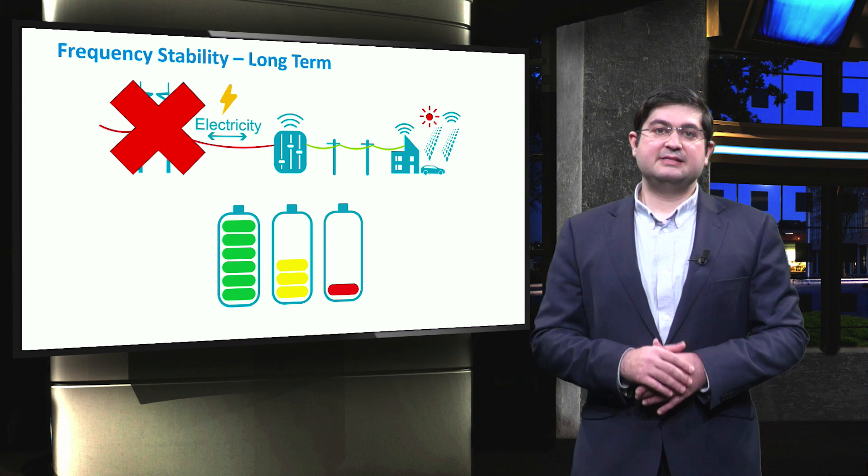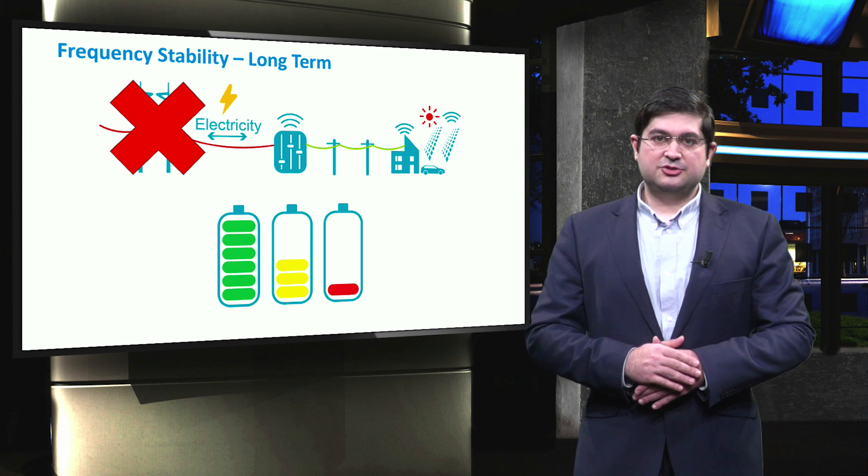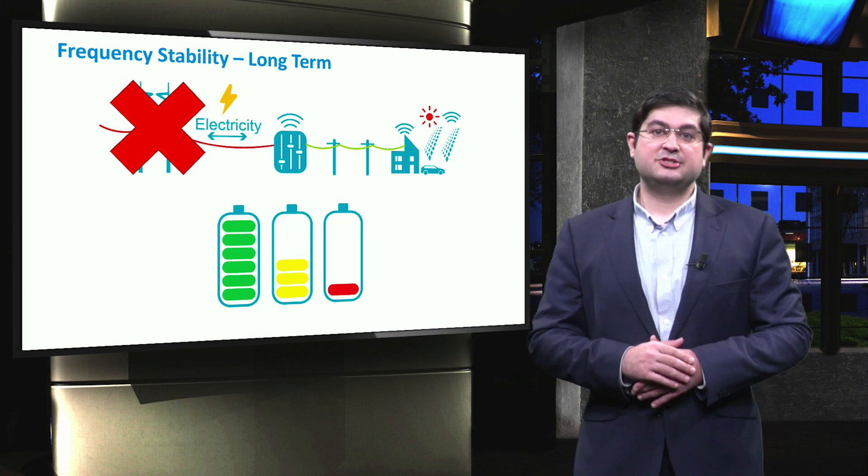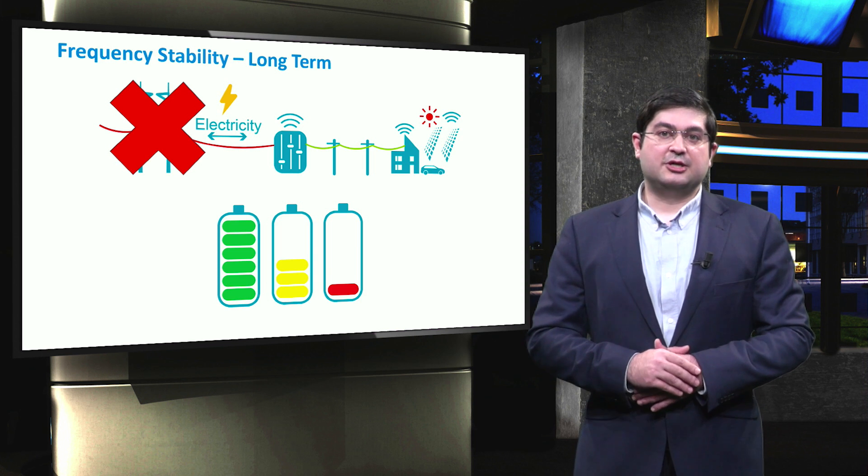However, as secondary control is a long-term service, we shall ensure that enough energy storage is available and stored in the batteries. Otherwise, the microgrid will shut down.